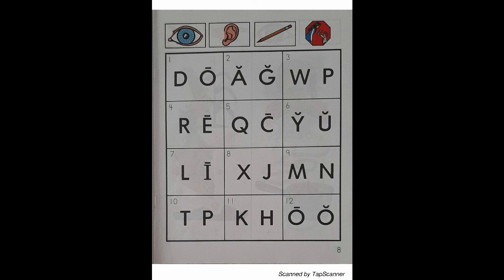Look at the letter in box 6. Listen as I say the sound of the letter. Y. With your pencil, circle the letter that reads Y.